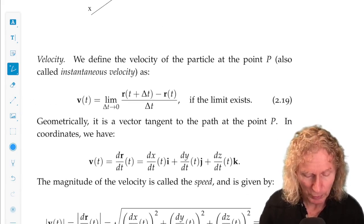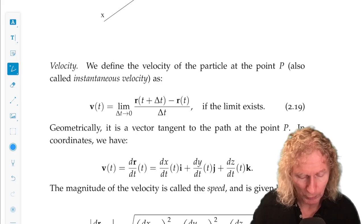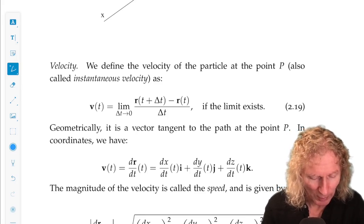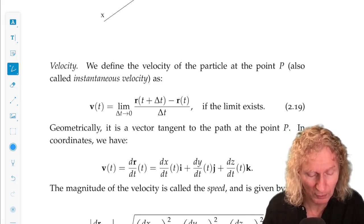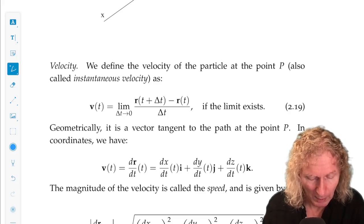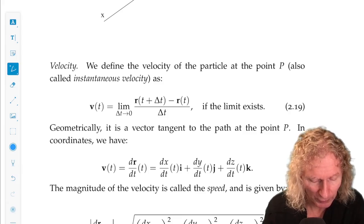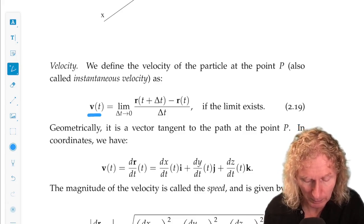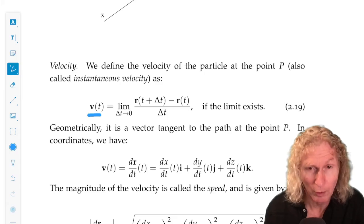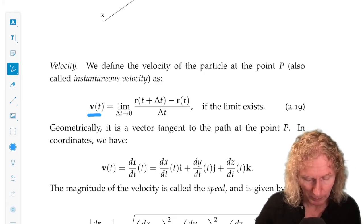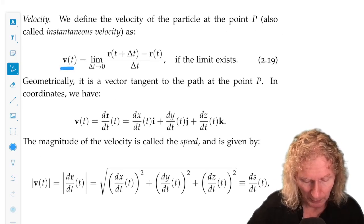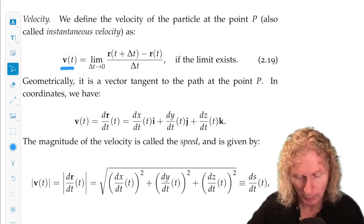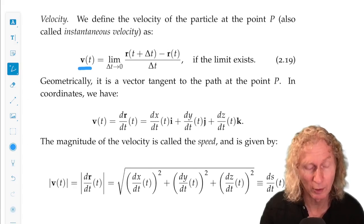And then we have notions that are probably familiar to you. We have the velocity, or instantaneous velocity, of the space curve. And that's just the time derivative of the space curve, or R of t, that defines the space curve. And it's a tangent vector to the path at the point p. That's the interpretation that we have.